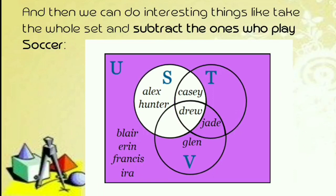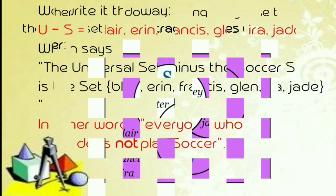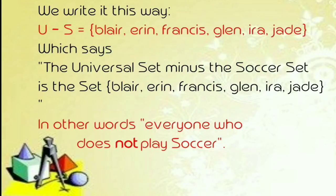And then, we can do interesting things like take the whole set and subtract the ones that play soccer. So, maaari natin alisin ang naglalaro ng soccer — sila Alex, Hunter, Cassie, at Drew. We write it this way: universal set minus soccer is equal to Blair, Erin, Francis, Glenn, Ira, and Jade. Silang anim ang hindi naglalaro ng soccer. We say the universal set minus the soccer set is the set Blair, Erin, Francis, Glenn, Ira, and Jade — in other words, everyone who does not play soccer. Universal set minus soccer: alisin natin yung naglalaro ng soccer at naiiwan yung mga hindi naglalaro ng soccer.